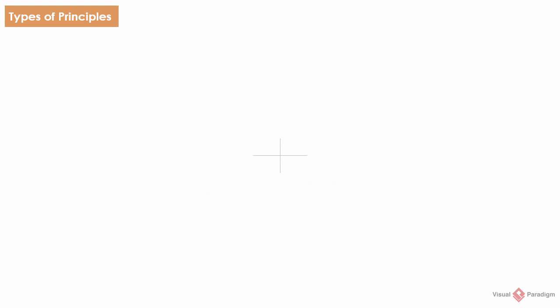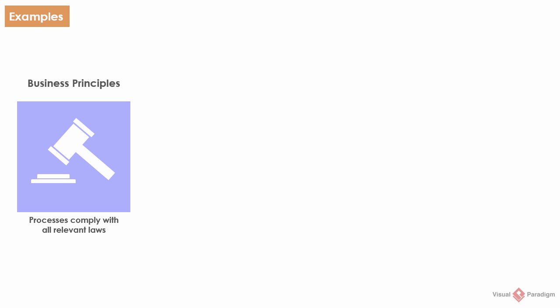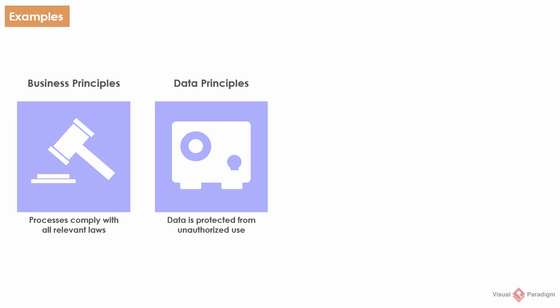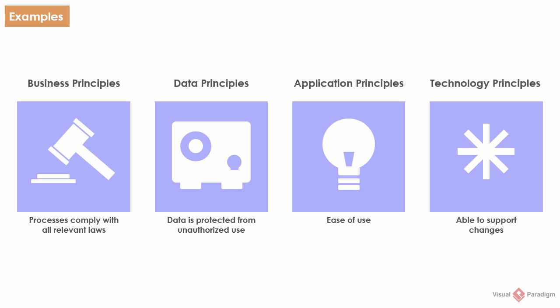Activity 2: Develop architecture principles. Principles are general rules and guidelines intended to be enduring and seldom amended, which inform and support the way in which an organization fulfills its mission. Generally, there are four categories of principles: business principles, data principles, application principles, and technology principles. For example, enterprise information management processes must comply with all relevant laws, policies, and regulations — that is a business principle. Data is protected from unauthorized use and disclosure — that is a data principle. Ease of use is an example of an application principle, stating that the underlying technology must be transparent to users so they can concentrate without distraction.